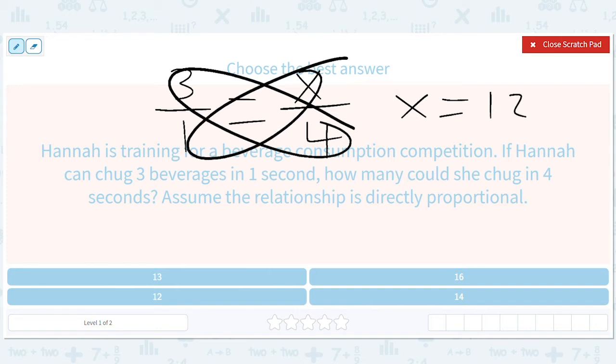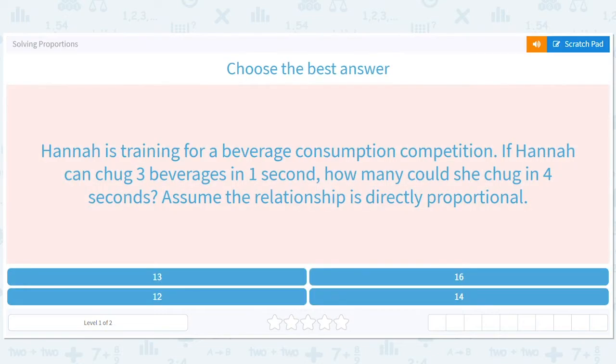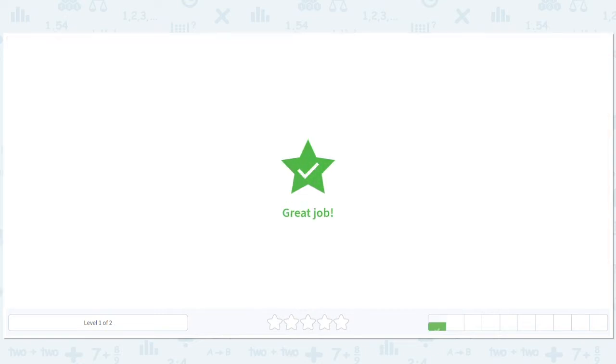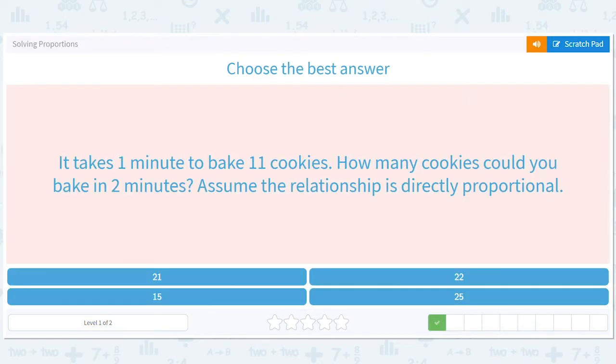You can draw a picture, right? So three beverages in one second. So this is one second. How about four seconds? 12. So we feel pretty calibrated on 12. You should not be chugging that many beverages ever in that amount of time.